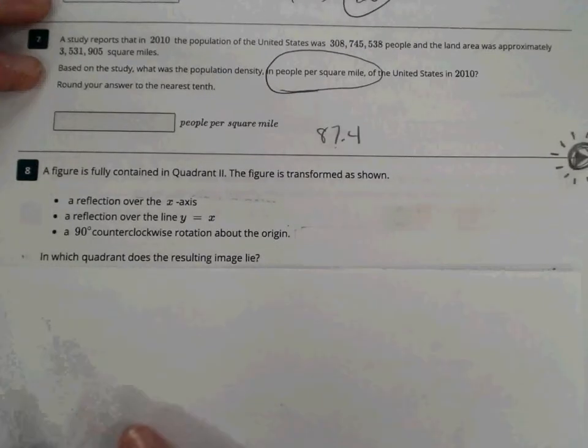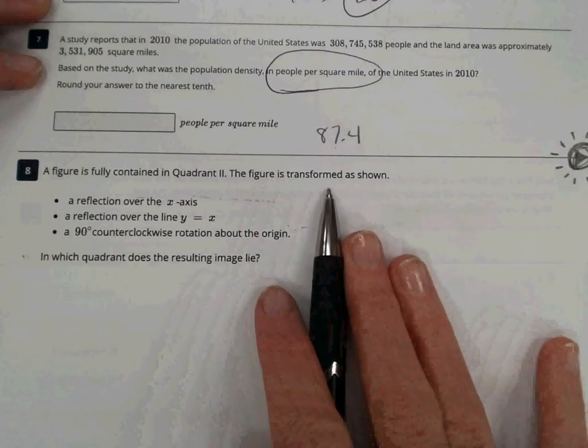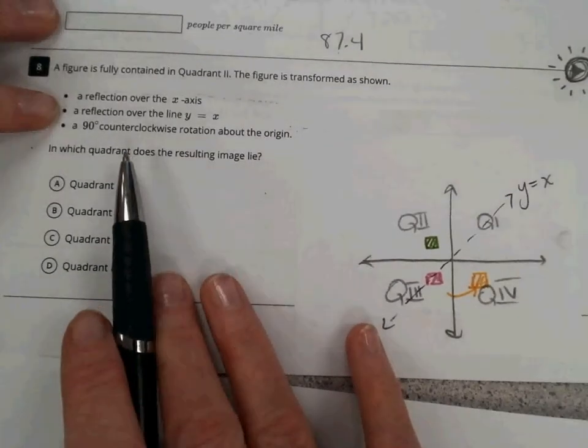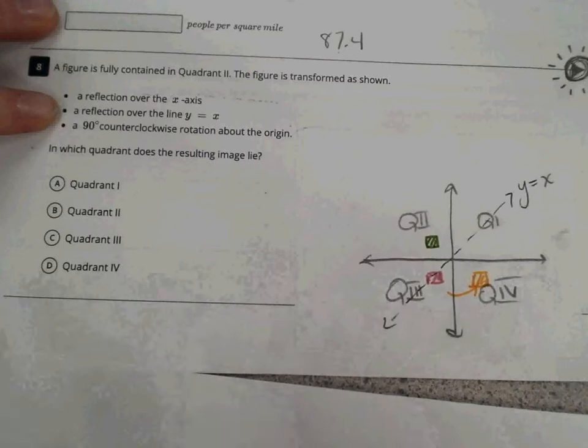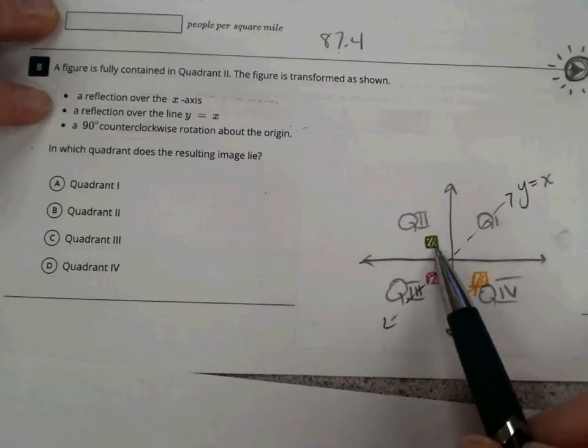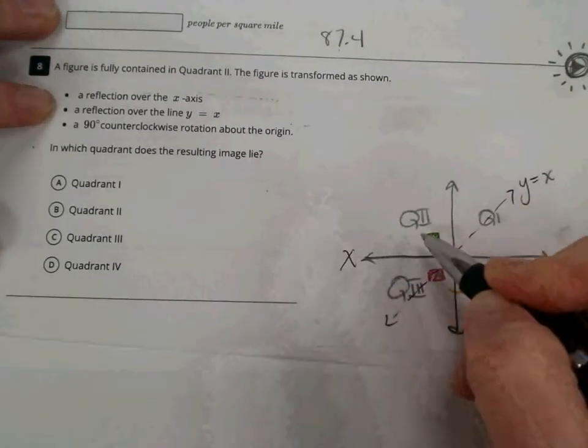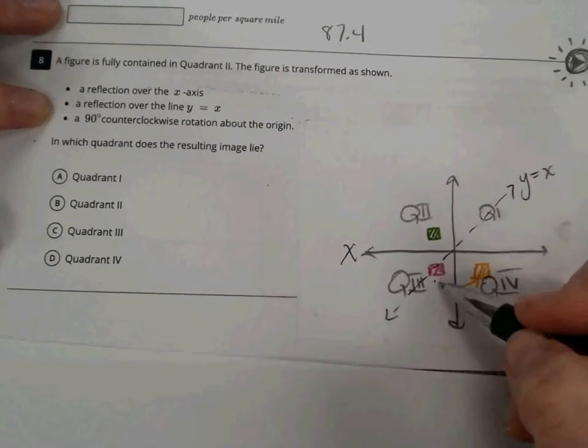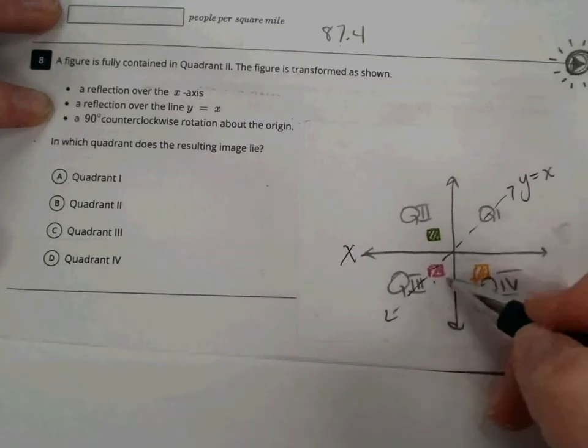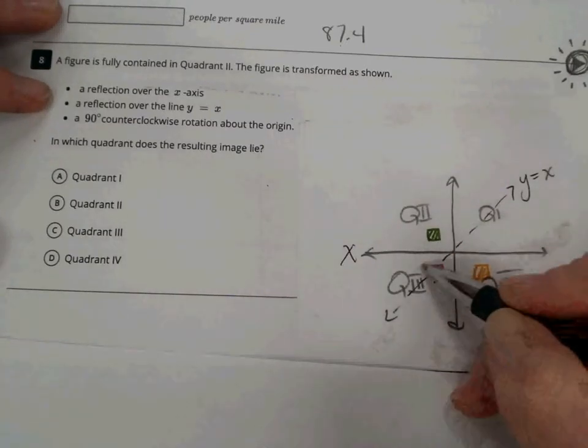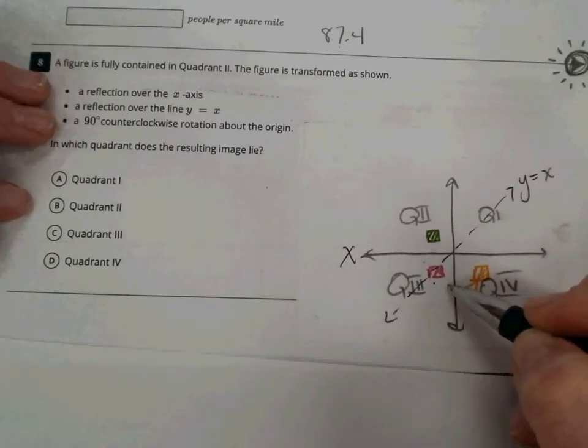Number 8. So, a figure is fully contained in quadrant two. The figure is transformed as shown. So, I drew a little picture here. We have a figure fully contained in quadrant two. You do need to know how to label those four quadrants. And I think a visual is super helpful here, just drawing it out. So, we have starting in quadrant two, a reflection over the x-axis. This is the x-axis. When I reflect, I end up with this pink object. I just drew a picture, a little square there. And then, a reflection over the line y equals x. Well, it's still going to be hanging out. If it was fully in the second quadrant, now it's fully in the third quadrant.